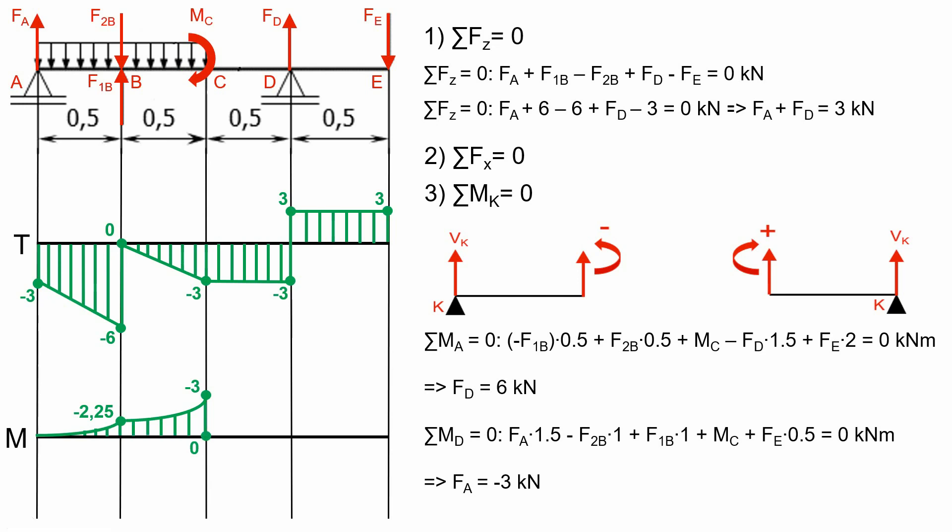Now we will add the area of this rectangle and we will reach minus 1.5. On the last section, we add the value of this rectangle and our diagram closes. All values of this diagram are expressed in kNm.